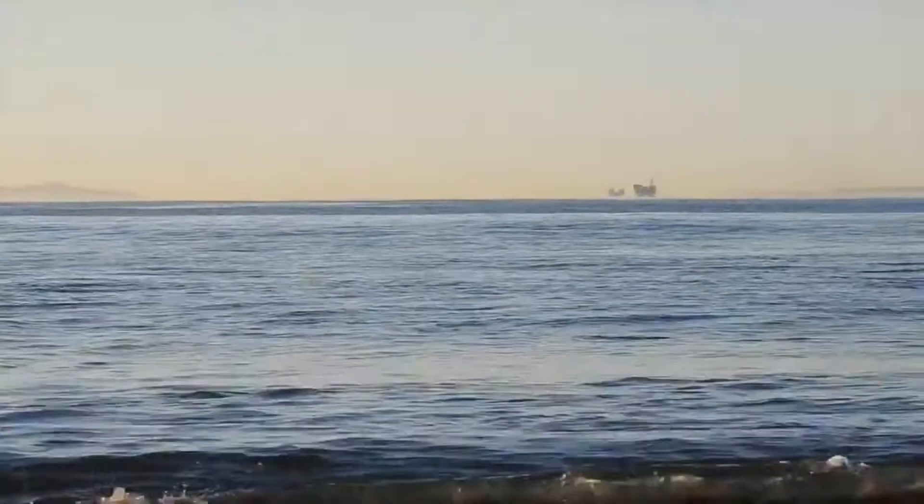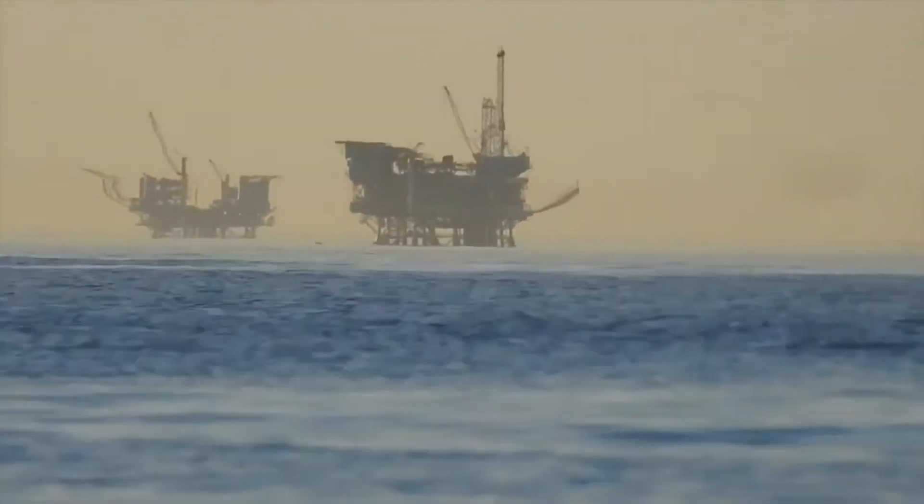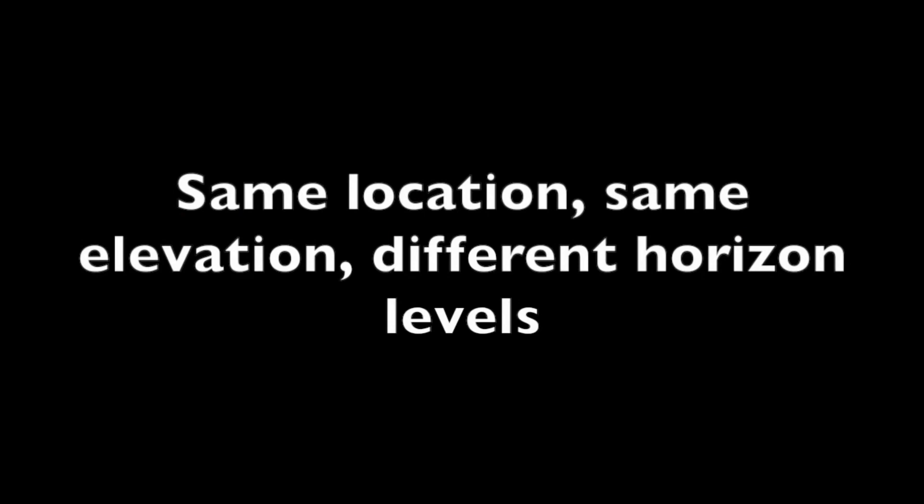Once in a while, not very often, there will be days when conditions are right to see the full image. What these conditions are, according to this Flat Earther, is not explained in this video. This is approximately where they cherry-picked the Black Swan image from. Same location, same elevation, different horizon levels. Again, this difference is never explained in this video, but the Flat Earthers ran with it and claimed victory.